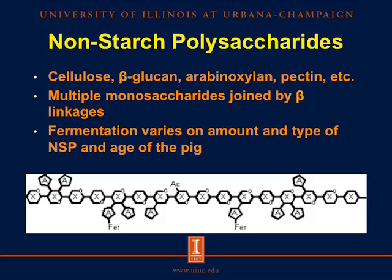Non-starch polysaccharides, or NSP, include cellulose, beta-glucan, arabinoxylan, pectins, and many others. These are multiple monosaccharides joined by beta-linkages, and this is the key difference from starch — these beta-linkages are not digested by the pig's enzymes. Therefore, NSP move from the small intestine to the large intestine where they are fermented. Fermentation varies based on the amount and type of NSP and the age of the pig. Here is a picture of arabinoxylan, which is a linear chain of xylose units joined by beta-1,4 linkages, randomly substituted by arabinose units also joined by beta-linkages, making arabinoxylans not digested by the pig's endogenous enzymes.